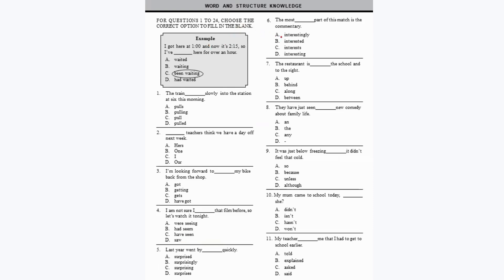This Olympiad paper consists of 50 questions and is for 60 marks, and you are given 60 minutes to complete this paper. There are four different sections. The first section is called Word and Structure Knowledge, where you will get questions from grammar and vocabulary, and each question carries one mark.